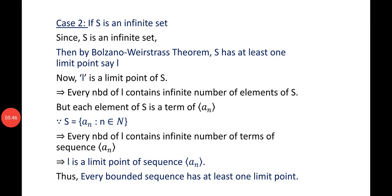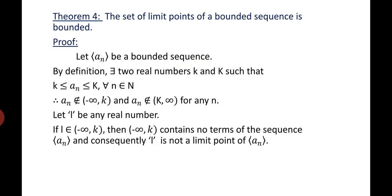Thus, every bounded sequence has at least one limit point. The next theorem states: the set of limit points of a bounded sequence is bounded. Let A_N be a bounded sequence. Since it is bounded, we have an upper bound and a lower bound.